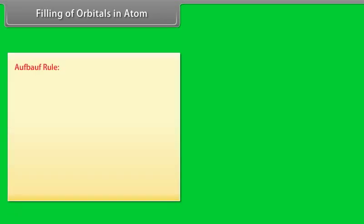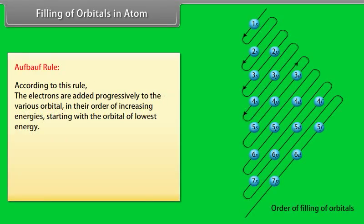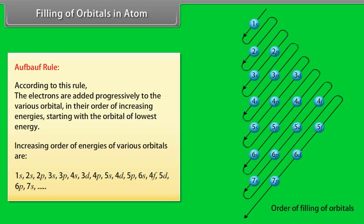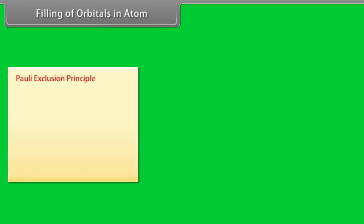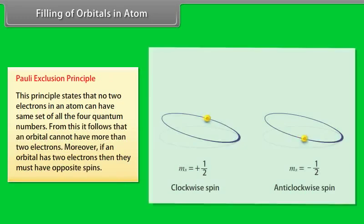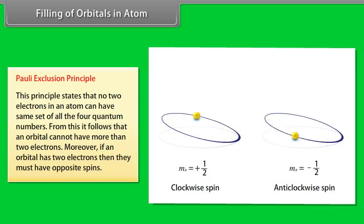Filling of Orbitals in Atoms — Aufbau Rule: According to this rule, electrons are added progressively to the various orbitals in their order of increasing energies, starting with the orbital of lowest energy. Pauli's Exclusion Principle states that no two electrons in an atom can have the same set of all four quantum numbers. From this it follows that an orbital cannot have more than two electrons, and if an orbital has two electrons, they must have opposite spins.